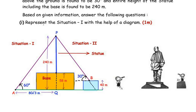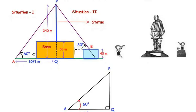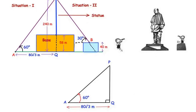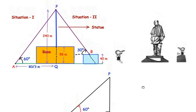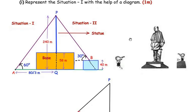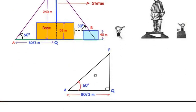In the first question, we have to show only situation 1. Representing situation 1, we have drawn triangle PQA. The length of AQ — the distance of point A from the base of the statue — is marked as 80√3 meters, and an angle of elevation of 60 degrees is marked. This is the diagram required for the first part of the question.